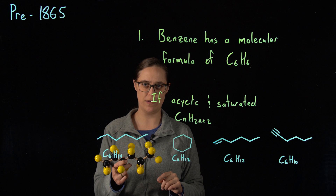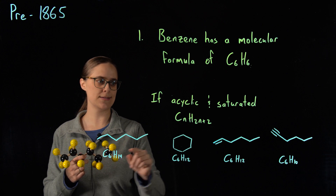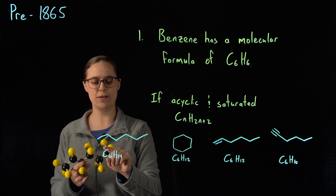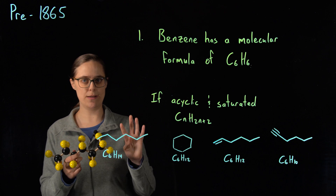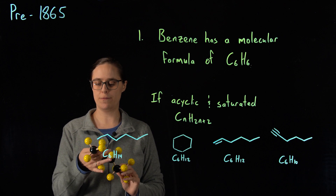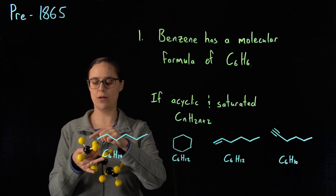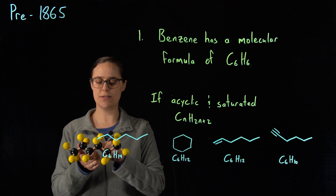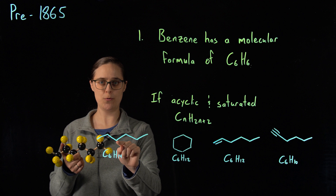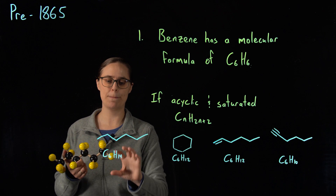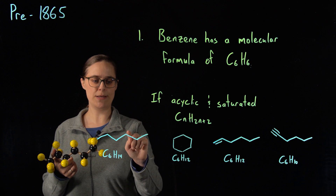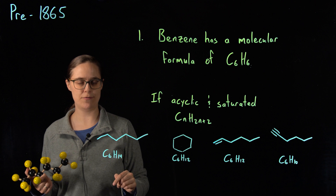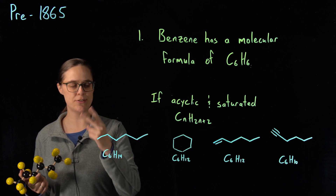Each carbon likes to make a total of four bonds. The first carbon is bonded to one other carbon, so it's bonded to three hydrogens — same with the last carbon. The carbons in the center are all bonded to two other carbons, so they each have two hydrogens. In other words, each carbon has at least two hydrogens, but the first and last at the ends of the chain have an extra hydrogen each — two more hydrogens total.